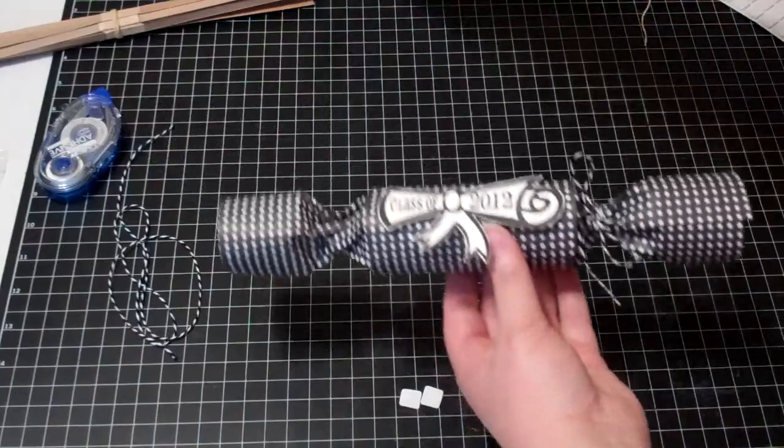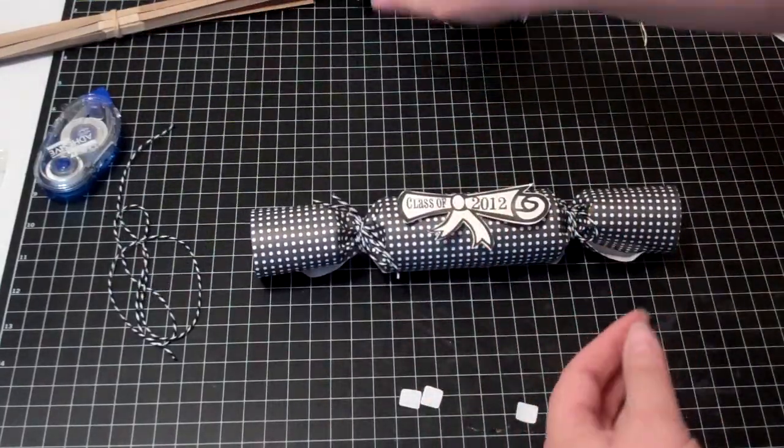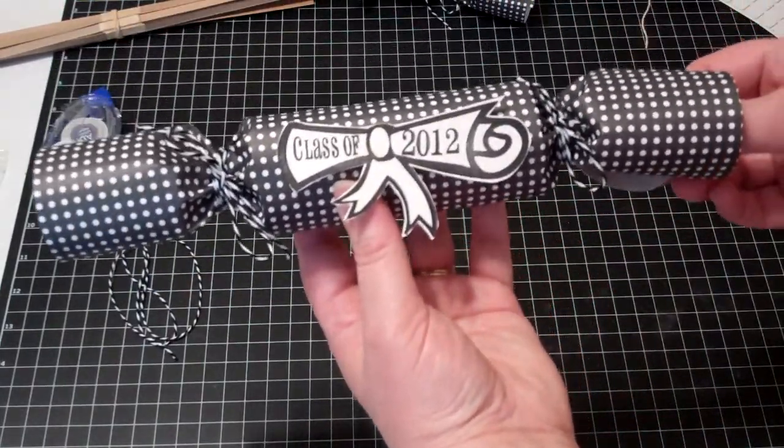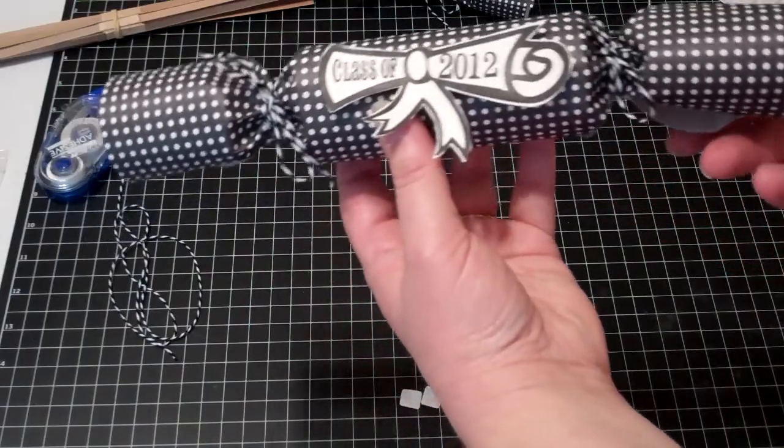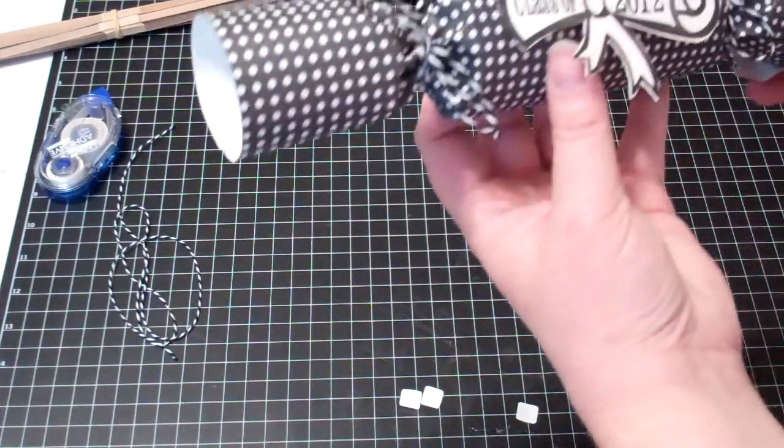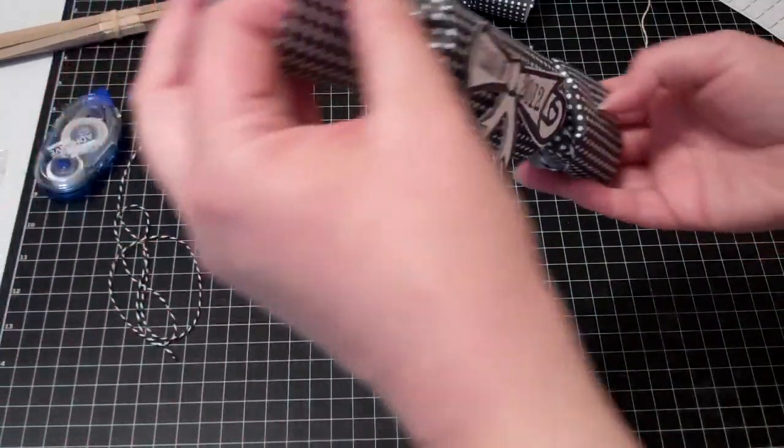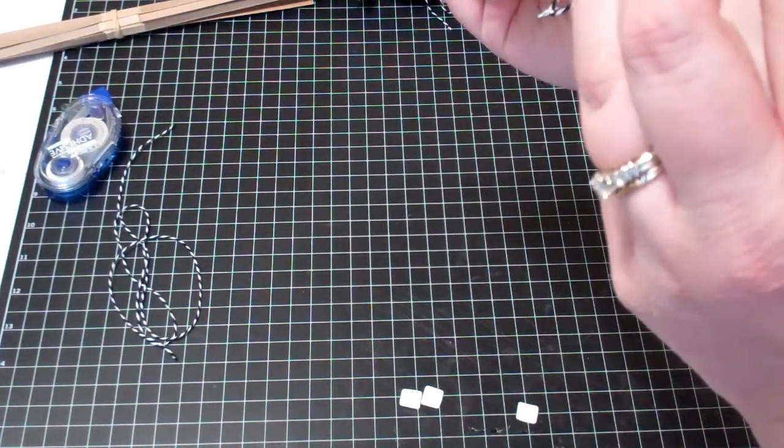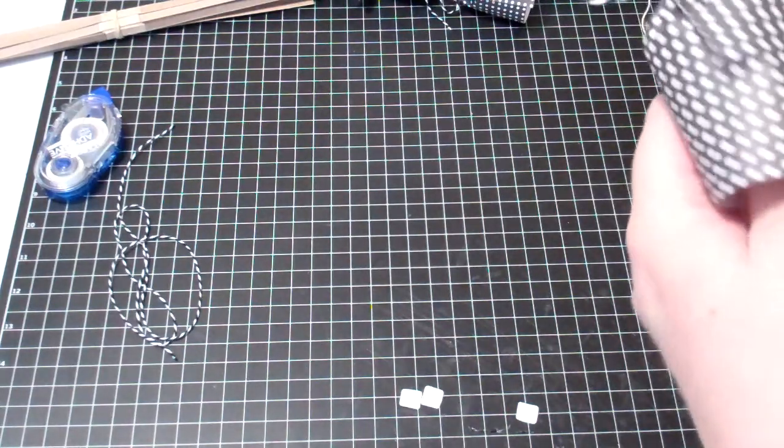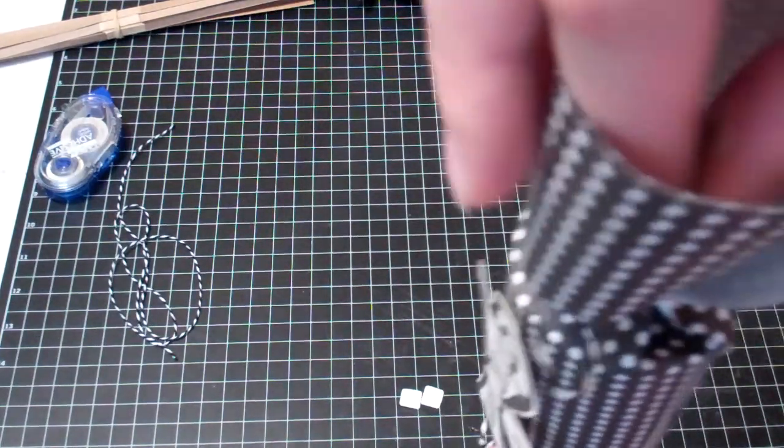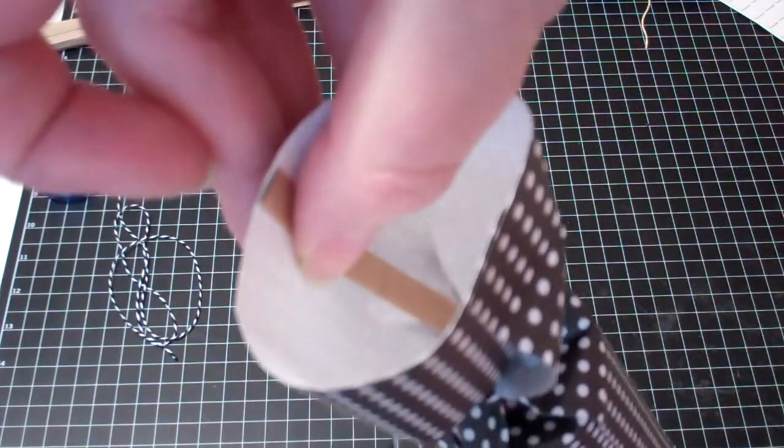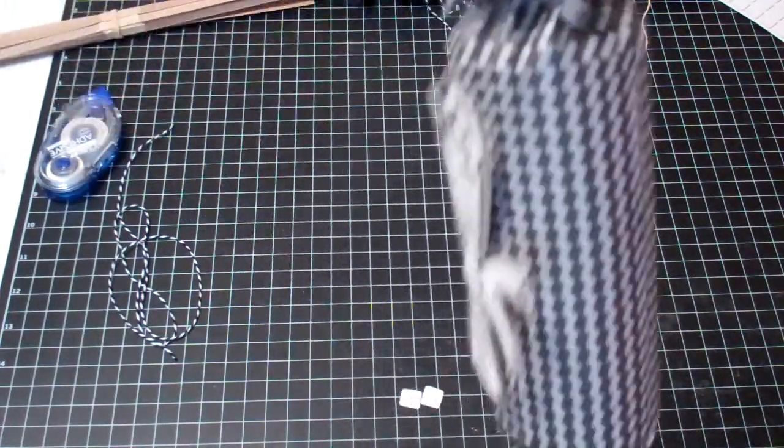And there you have what is a fun little treat. And in this case, hopefully this is going to work for me today and cooperate. So we'll see here if we were ready to hand these out and open these. All you're going to do is you're going to take and put your thumb on either end of the cracker where that little piece of cardboard is.